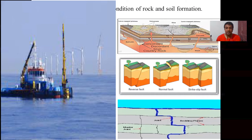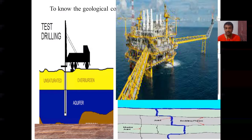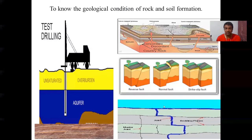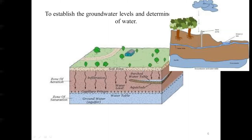Under the seabed, we have a number of bedding planes that occur over time. Within this seabed, there can be a number of faults, joints, and cracks. When vibration occurs, if a structure is built on it, the bedding planes deform and the structure collapses. Several such cases have been observed in petroleum jackets and refineries.